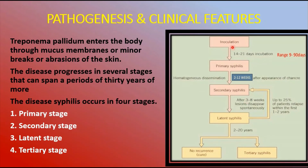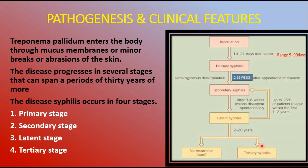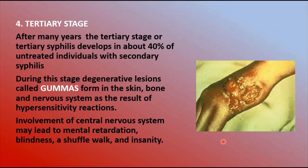To summarize the progression: after inoculation, primary syphilis develops; then 2–12 weeks after appearance of the chancre, it may enter secondary syphilis. Secondary syphilis leads to latent syphilis after 3–8 weeks when lesions disappear spontaneously, though 25% of patients relapse within 1–2 years. From the latent phase, with treatment there may be no recurrence, but otherwise there is a chance of tertiary syphilis developing after 2–20 years, characterized by gummas and hypersensitivity damage.